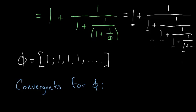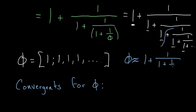For example, if we cut it off at a certain point, then phi is approximately equal to 1 plus 1 divided by 1 plus 1 over 1. If you simplify this, that's 1 plus 1 half, which is simply 3 halves.